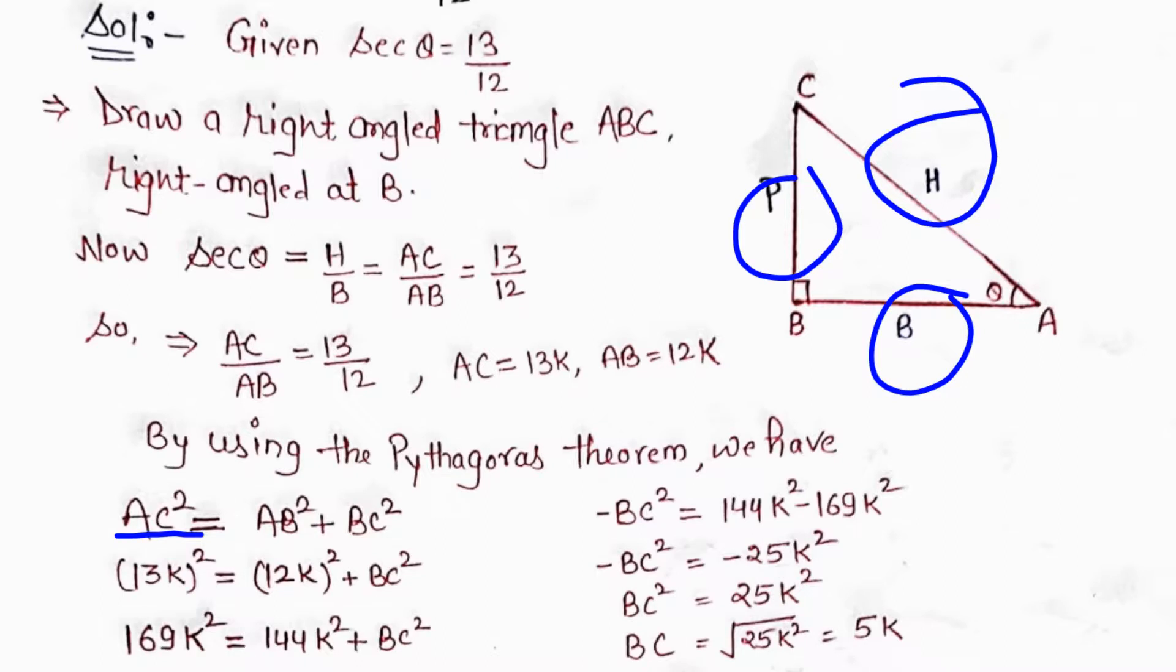AC = 13K, so (13K)² = (12K)² + BC². Now, 13² = 169, so 13K squared is 169K². And 12² = 144, so 12K squared is 144K².